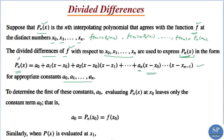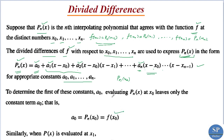To express pn(x) in this form, we need to determine the constants a0, a1, a2, ..., an. To find a0, we evaluate pn(x) at the point x0. When x = x0, all terms containing (x - x0) vanish, leaving only a0. Therefore a0 = pn(x0) = f(x0), the value of f at x0 itself.